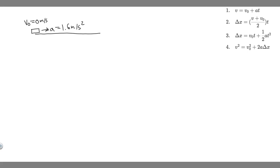In this problem, we're told a child slides down a hill on a toboggan with an acceleration of 1.6 meters per second squared. If she starts at rest, how far has she traveled in A, 1 second, B, 2 seconds, and C, 3 seconds?